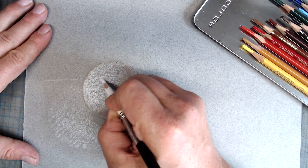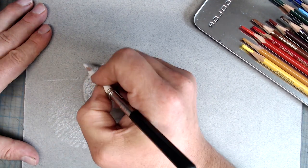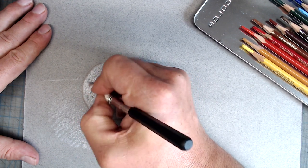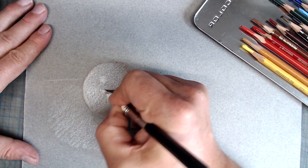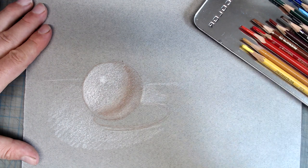In general, it's important to build up gradually, without applying too much pressure, because that will flatten the paper fibers, making the surface very slick, preventing the colored pencils from building up properly.